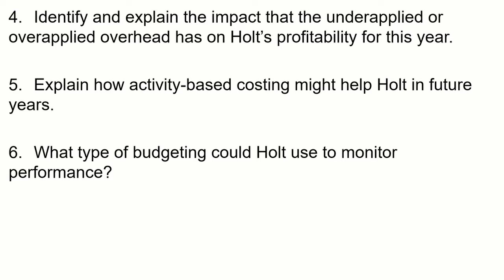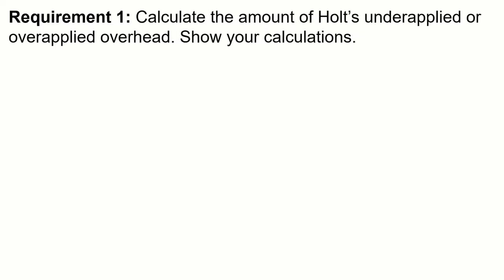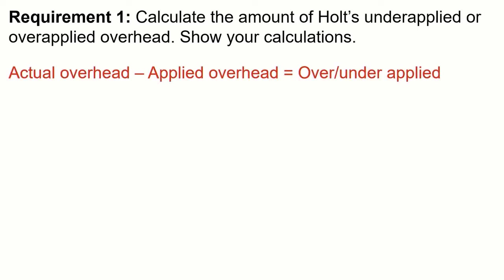Starting with requirement one: calculate the amount of underapplied or overapplied overhead. The formula is actual overhead minus applied overhead. We need to determine how much overhead was applied. The actual overhead was given to us, so we just need to compare those two numbers. To find applied overhead, we first need the predetermined overhead rate, which is set at the beginning of the period using estimated figures.